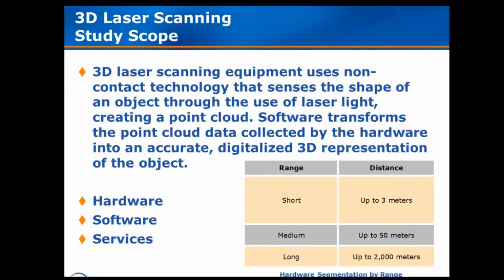Hardware includes the 3D laser scanning equipment that collects the data for the X, Y, and Z coordinates that represent the object's outer surface. ARC has further segmented the hardware category into three subdivisions based on the range of 3D laser scanners, as scanners of different ranges usually have specialized applications.